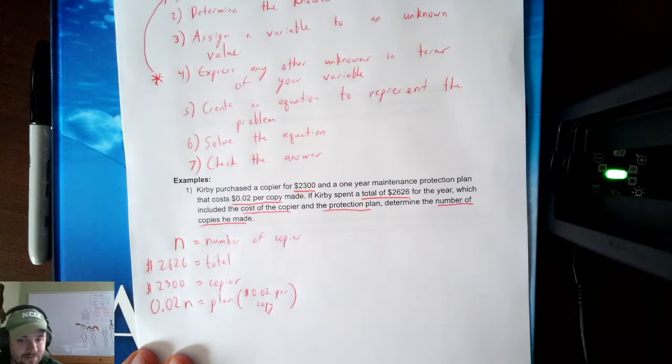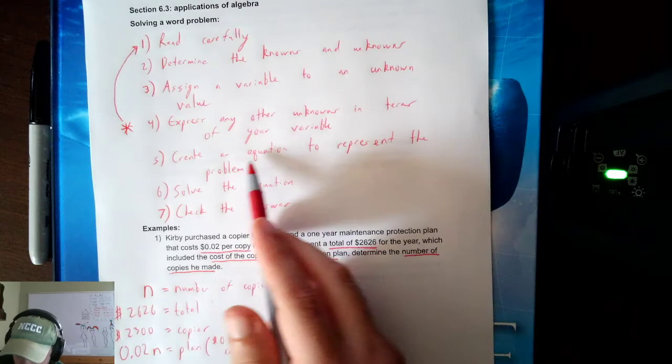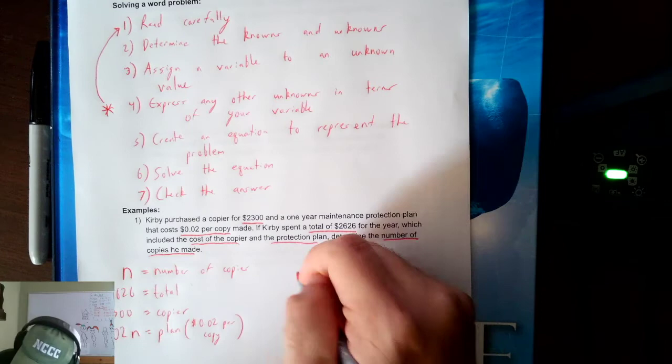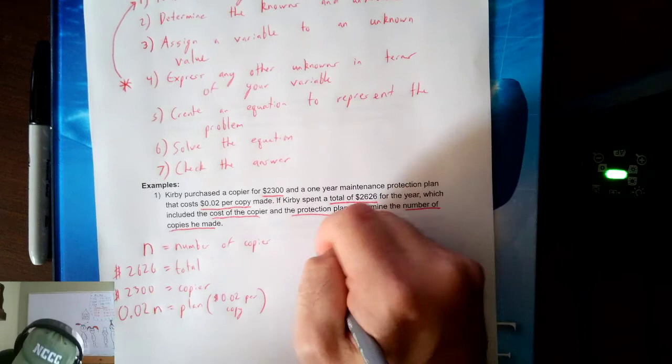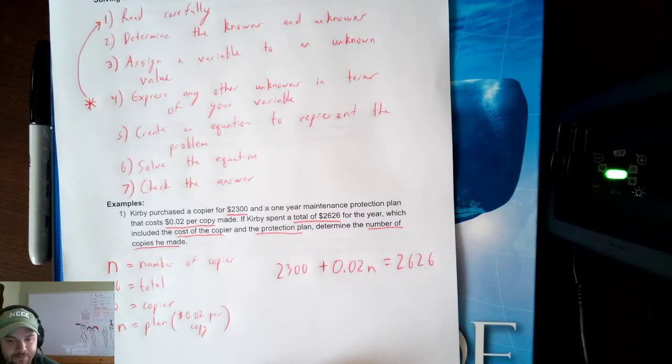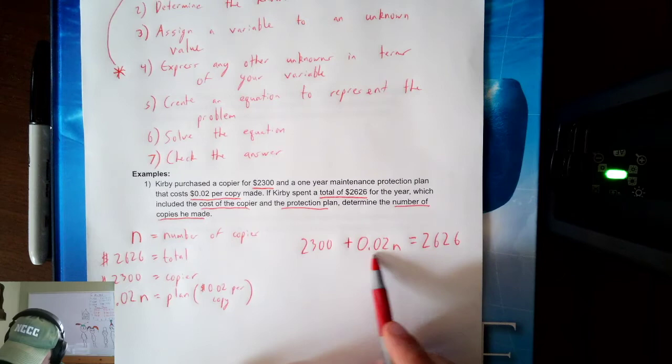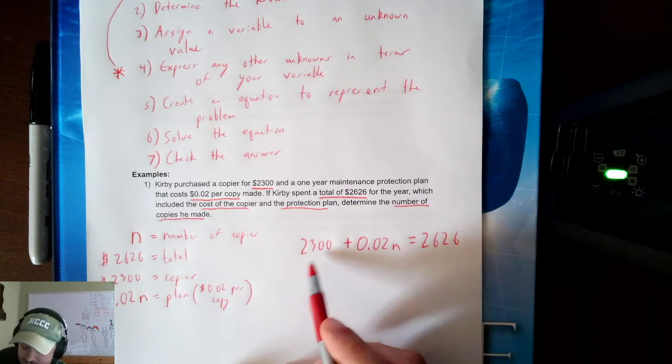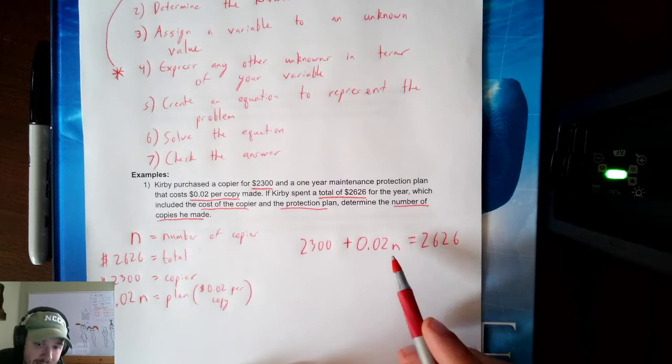I have done steps one through four. I now need to create an equation to represent the problem. The total is $2,626, and the two things that cost money are the copier and the plan. If I add the cost of the copier plus the cost of the plan, I should get the total cost. This is a linear equation with a single variable N.